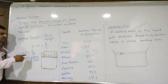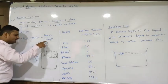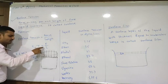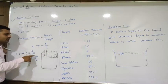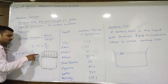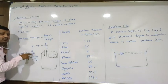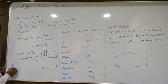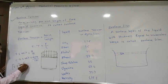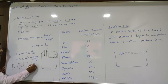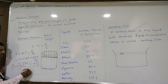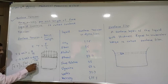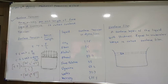The formula of surface tension is: surface tension T equals force F divided by length L. The SI unit is Newton per meter, and the CGS unit is dyne per centimeter. The dimension of surface tension is: dimension of force M1 L1 T-minus-2 divided by dimension of length L1, giving M1 L0 T-minus-2.